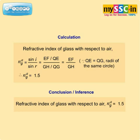N_AG = sin i / sin r = (EF / QE) / (GH / QG) = EF / GH, since QE and QG are radii of the same circle and QE equals QG. Therefore, N_AG = 0.9 / 0.6 = 1.5. Conclusion: the refractive index of glass with respect to air, N_AG, is equal to 1.5.